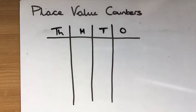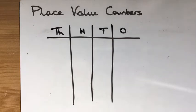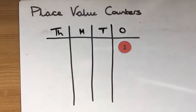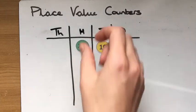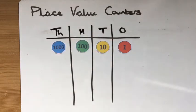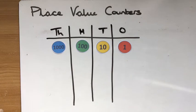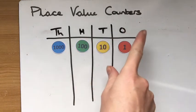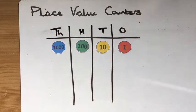Place value counters are essentially small counters with different colours that you can make or cut out that have the values of the different columns on there. So there's a one place value counter, a ten, a hundred and a thousand place value counter. You can keep going. You could have tens of thousands all the way up to the millions and you can go this way as well. You can make them for tenths and hundredths. But just for today to show you how they work, I'm just going to focus on these main four.